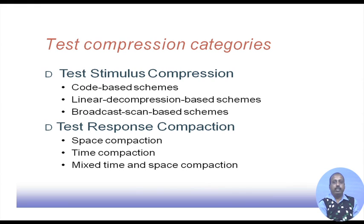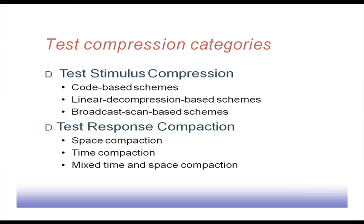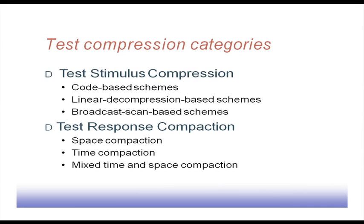Response compaction has two sub-types. Space compaction tries to reduce the number of outputs — if a circuit has a hundred outputs, a space compactor may reduce them to ten or twenty. Time compaction reduces the instances we store, so we do not store responses for all ten thousand patterns but look at fewer instances. Mixed time and space compaction is a combination of these two.